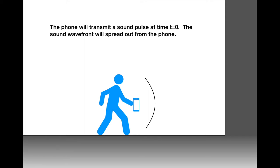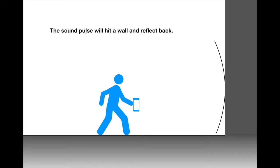The way this is going to work is that Phyphox will transmit a sound pulse at time t equals zero. The sound wavefront will then spread out from the phone. Here the sound wavefront is shown as the black line moving away from the phone, and it's curved because the sound spreads out in all directions. The wave will move across the room and eventually collide with a wall, hit that wall, and then reflect back. This is basically an echo.